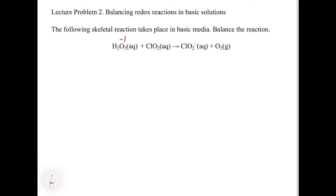So with ClO₂, we have two O's which are -2 each, and then we have the Cl. This gives us a +4 charge for the Cl. Then for ClO₂⁻ on the right, we have two O's that are -4 total, and then we have an additional -1 charge, so this is going to be +3 for Cl in ClO₂⁻. And oxygen in O₂ is going to be zero because it's a molecule in its elemental form. So our O is going from -1 to 0, so that's being oxidized, and our Cl is being reduced.